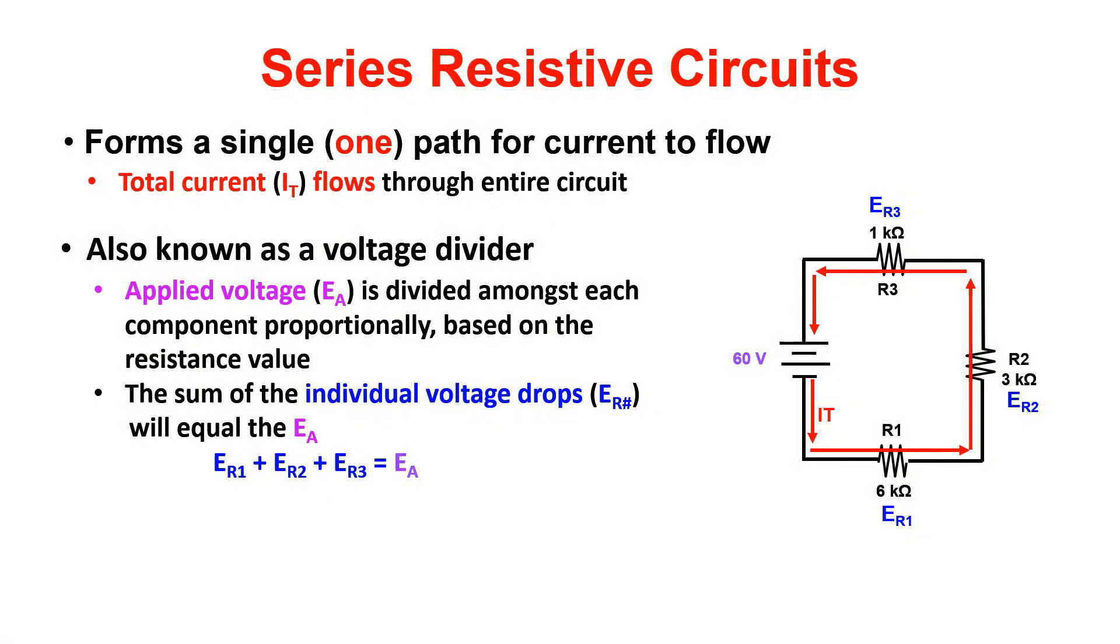So a couple things with series circuits. In series circuits there's only one path for current, leaving the negative terminal of the battery and passing through R1, R2, and R3, then returning to the battery at the positive terminal.